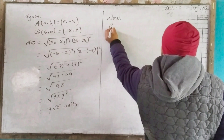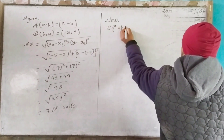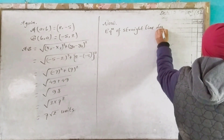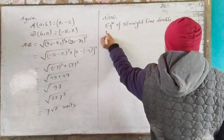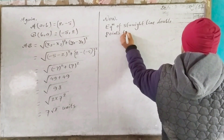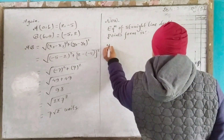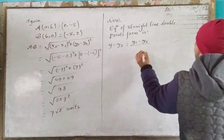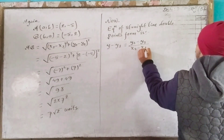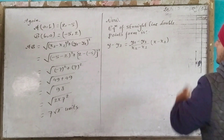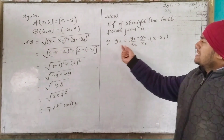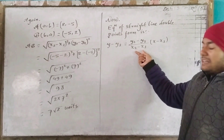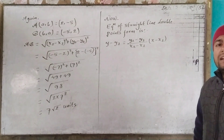Now, the equation of the straight line. Using the two-point form: y minus y1 equals (y2 minus y1) divided by (x2 minus x1), into (x minus x1).